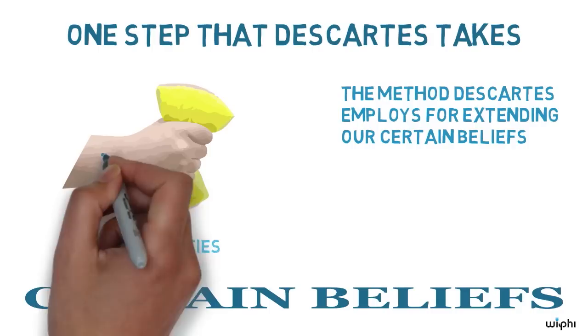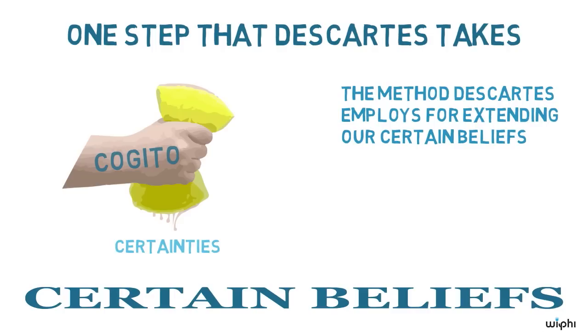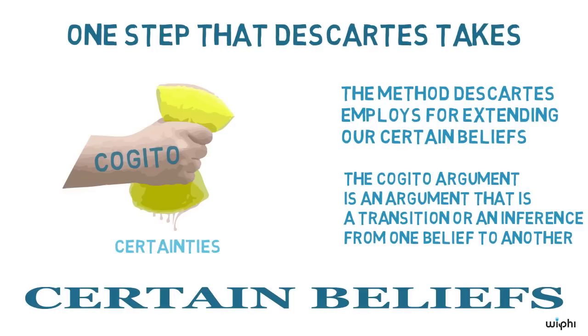The method Descartes employs for extending our certain beliefs consists in squeezing out the certainties he has already arrived at. Actually, we have already encountered this method, for Descartes' Cogito argument is such a way of squeezing out a certain belief or idea from another.